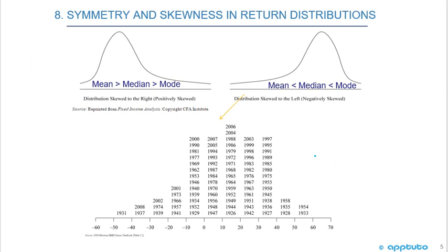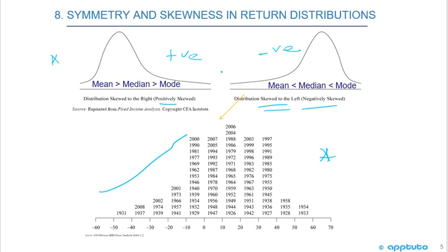Here's the histogram using Ibbotson data from 1926 to 2008, and it's skewed to the left — it's negatively skewed. Up here at the top we have the positive skewed: mean is greater than median is greater than mode. Here we have the negative skewed: mean is less than median is less than mode. Positive to the right, negative to the left — you'll be able to answer any question in words using that rule.